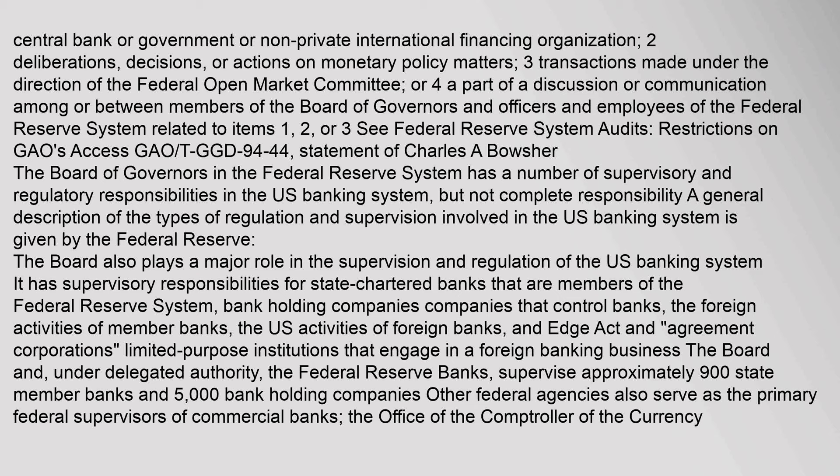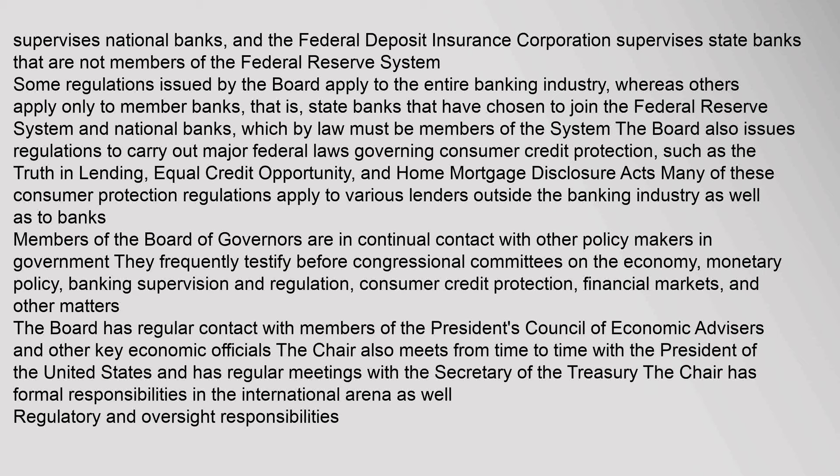Other federal agencies also serve as the primary federal supervisors of commercial banks: the Office of the Comptroller of the Currency supervises national banks, and the Federal Deposit Insurance Corporation supervises state banks that are not members of the Federal Reserve System. Some regulations issued by the Board apply to the entire banking industry, whereas others apply only to member banks. The Board also issues regulations to carry out major federal laws governing consumer credit protection, such as the Truth in Lending, Equal Credit Opportunity, and Home Mortgage Disclosure Acts.